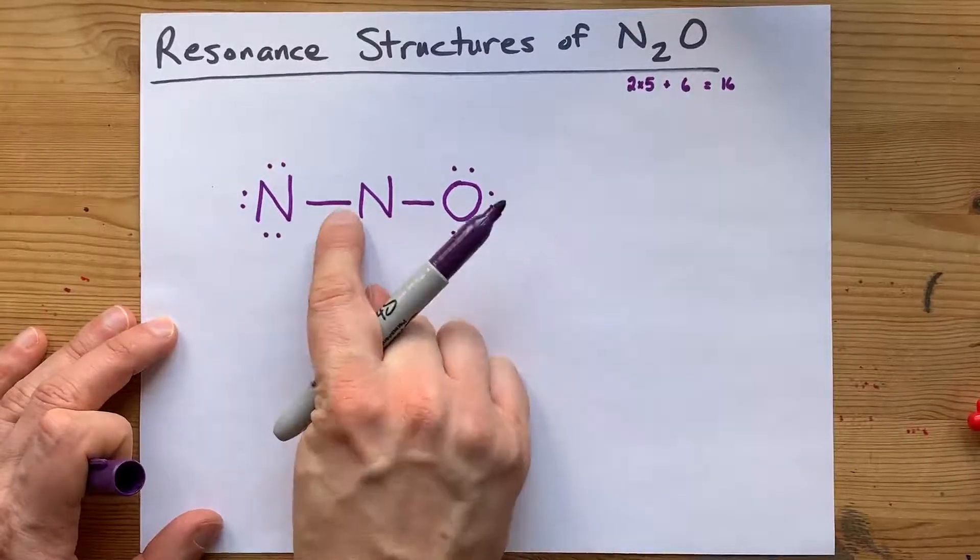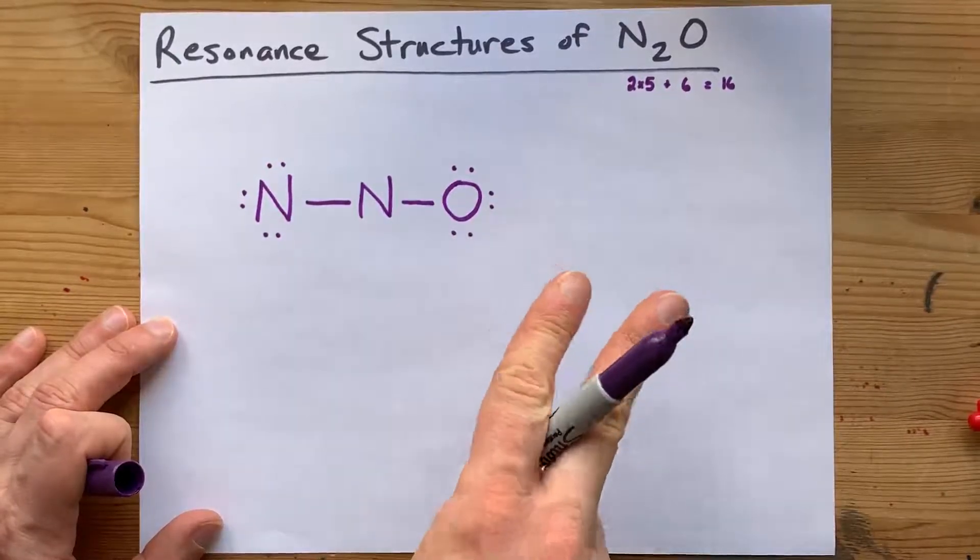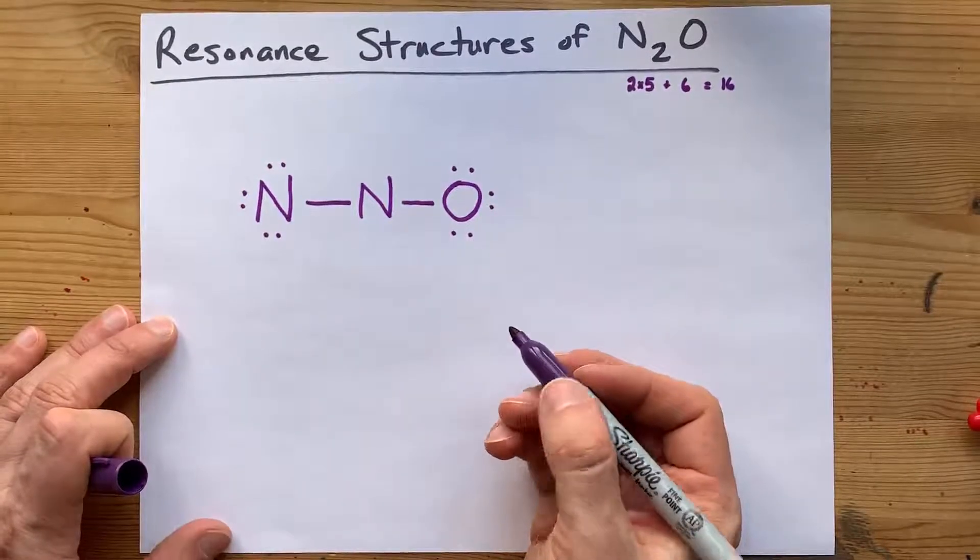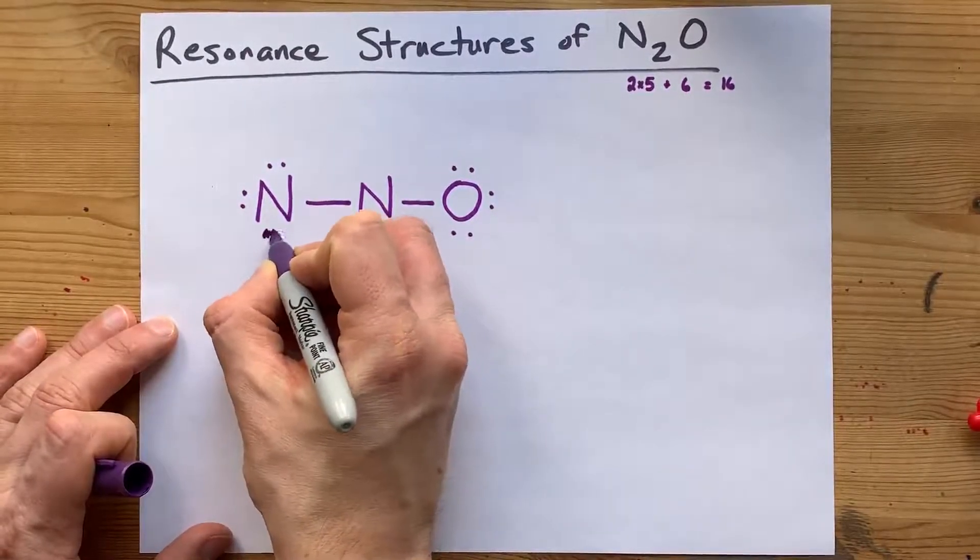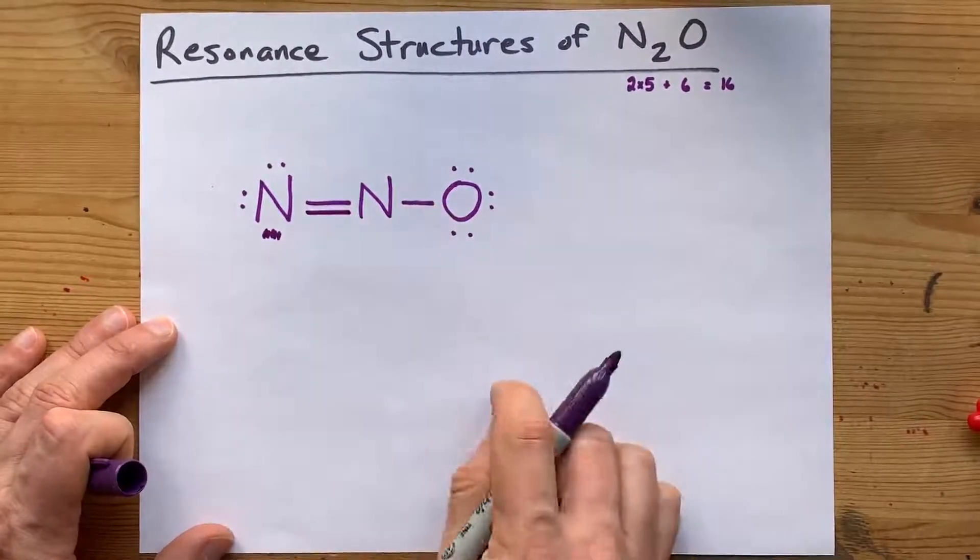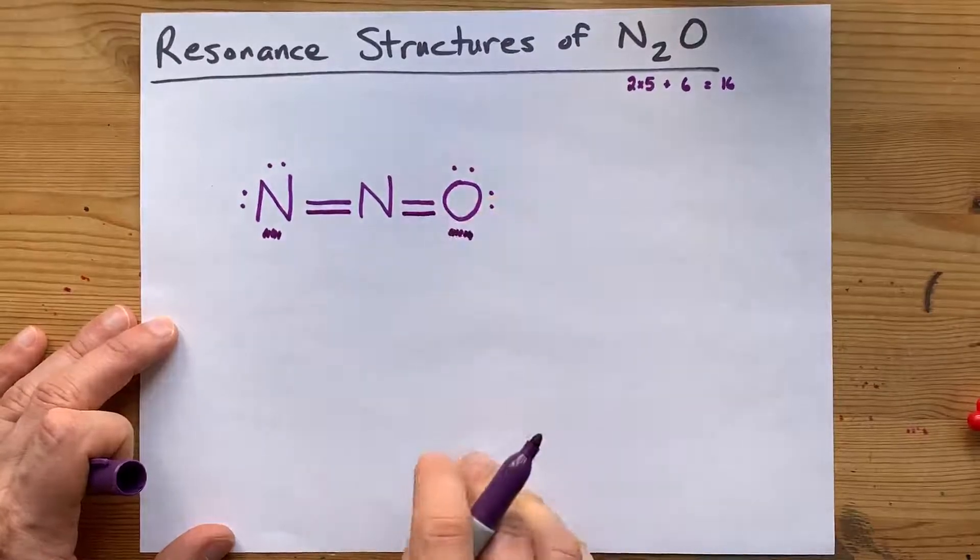Nitrogen in the center really only has 4 electrons, so we need 2 more pairs, or 4 more electrons, to make it happen. I'm going to move this pair of electrons into a double bond, and I'm going to move this pair of electrons into a double bond.